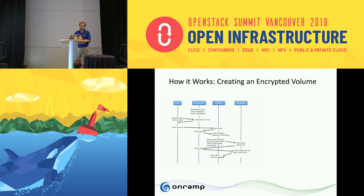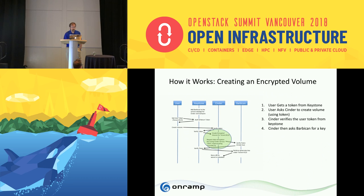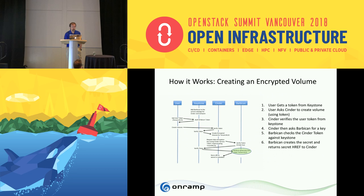Here's how the workflow works when creating a new encrypted volume. First, the user gets a token from Keystone, then uses that token to ask Cinder to create a volume. Cinder verifies that token with Keystone. Once verified, Cinder asks Barbican for a key using its own service user account and token — Barbican also verifies that. If everything's valid, Barbican generates the key and returns it to Cinder, which then stores that secret reference in its database as part of the volume metadata.